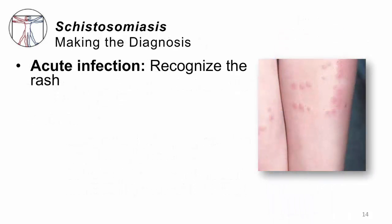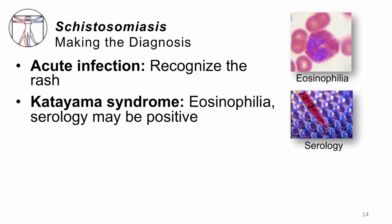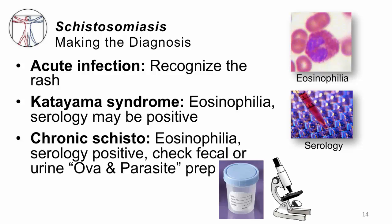How do you make a diagnosis? First, look for the acute infection. Recognize that rash of swimmer's itch — if you're in North America, it's just bird schisto, but if you're dealing with someone from the tropics, that may actually be human schistosomiasis setting up a systemic infection. Second, don't forget about Katayama syndrome: if your patient presents with a high eosinophil count, high fever, and a systemic illness characterized by low blood pressure, think about Katayama. Find out if they went swimming or were exposed to water a couple of months earlier. Finally, for chronic schisto, these patients should have a high eosinophil count, a positive serology test, and you can check their feces or urine for eggs. In the case of Schistosoma hematobium, have them urinate in a cup — if you see those eggs, there's nothing else that could cause this; you've made your diagnosis.